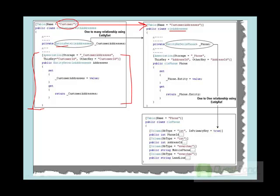We then use the association mapping to define which keys will be used for association. In the association mapping we define that from the CLS Customer class, the customer ID property will be mapped to the customer addresses customer ID property. So both classes will have customer ID in common. We also define that the EntitySet is stored in the customer addresses variable.